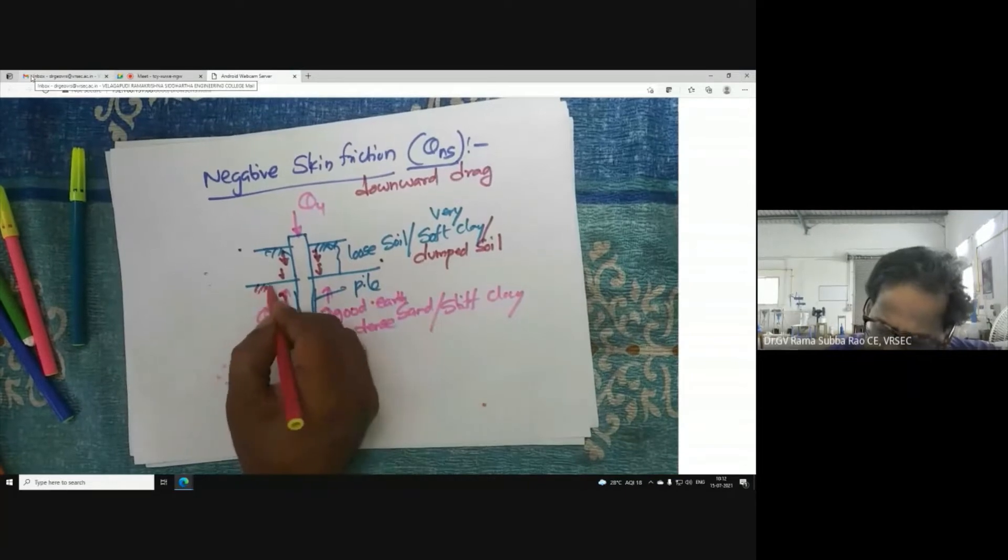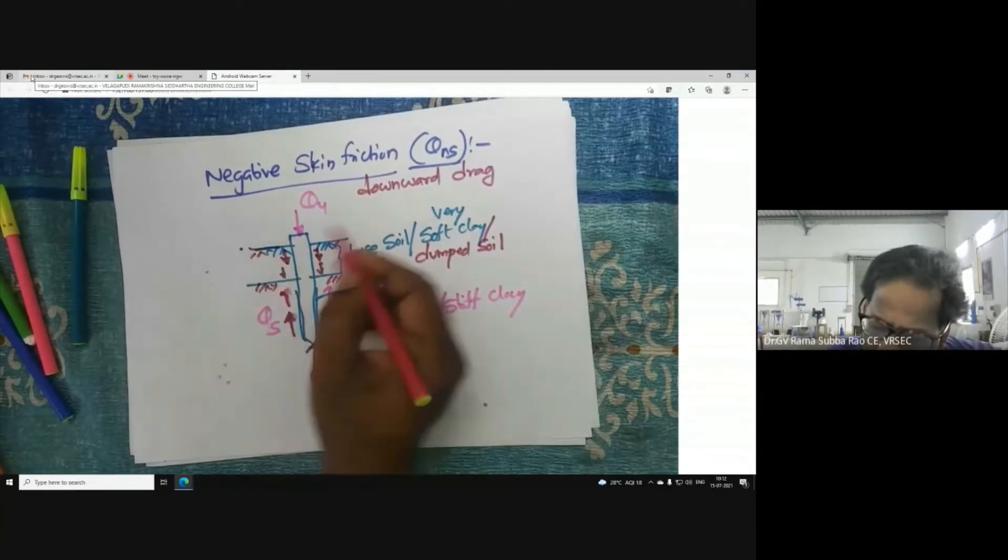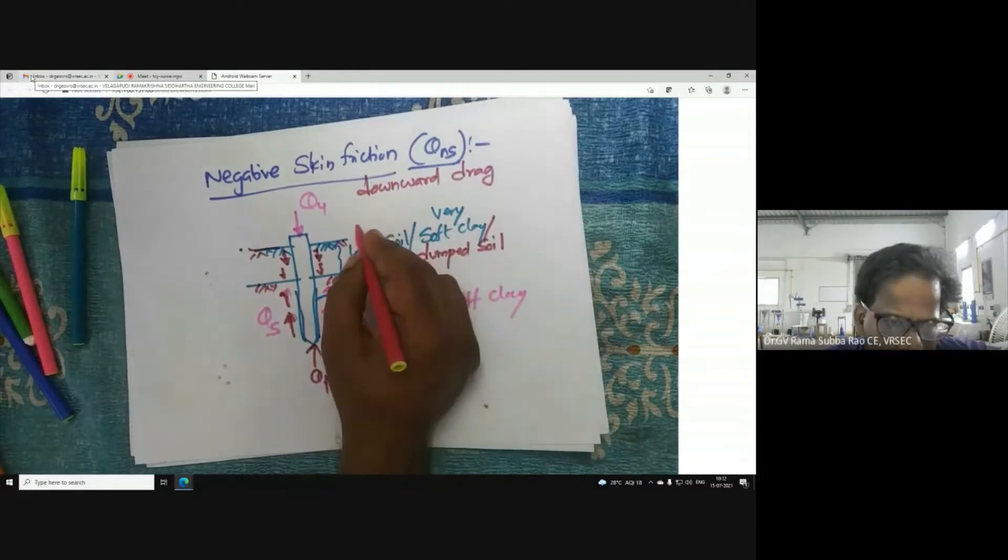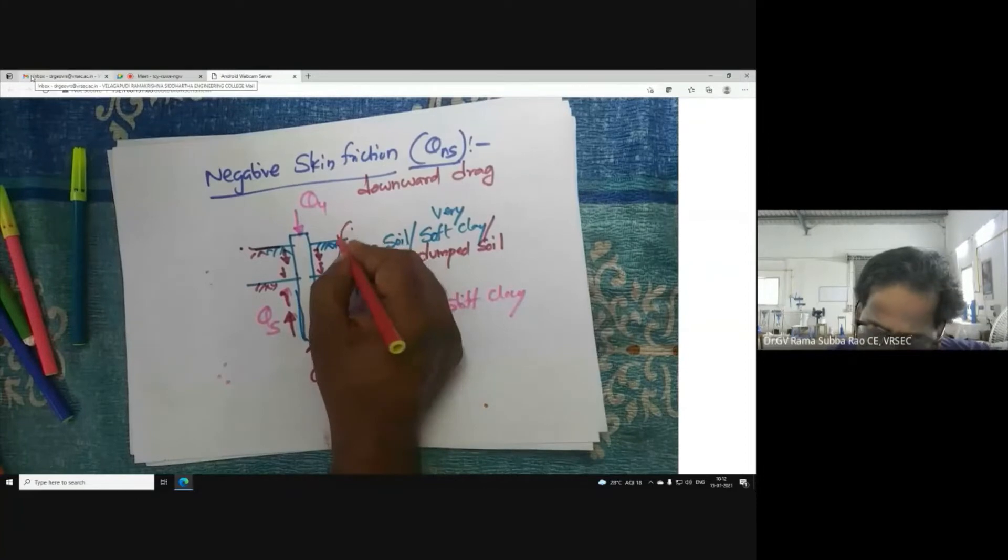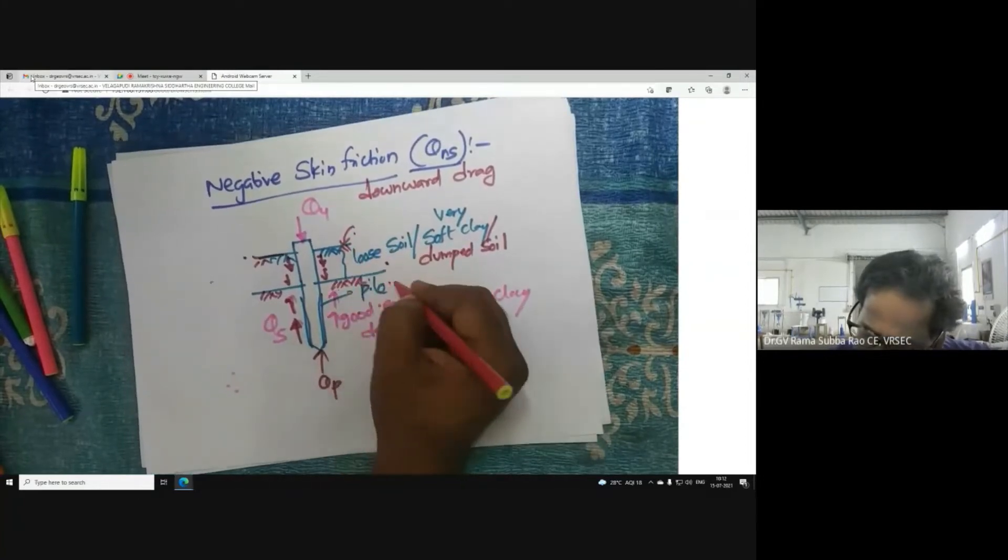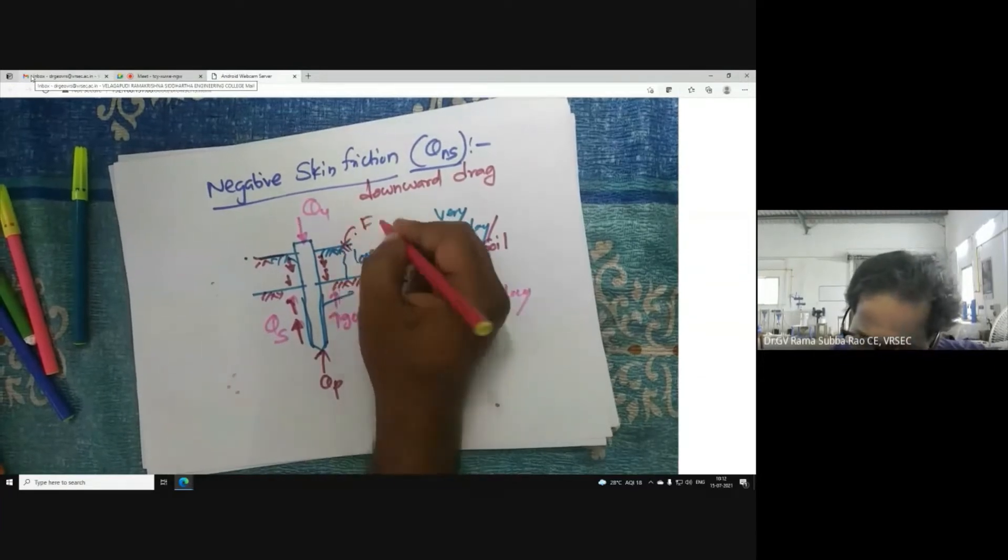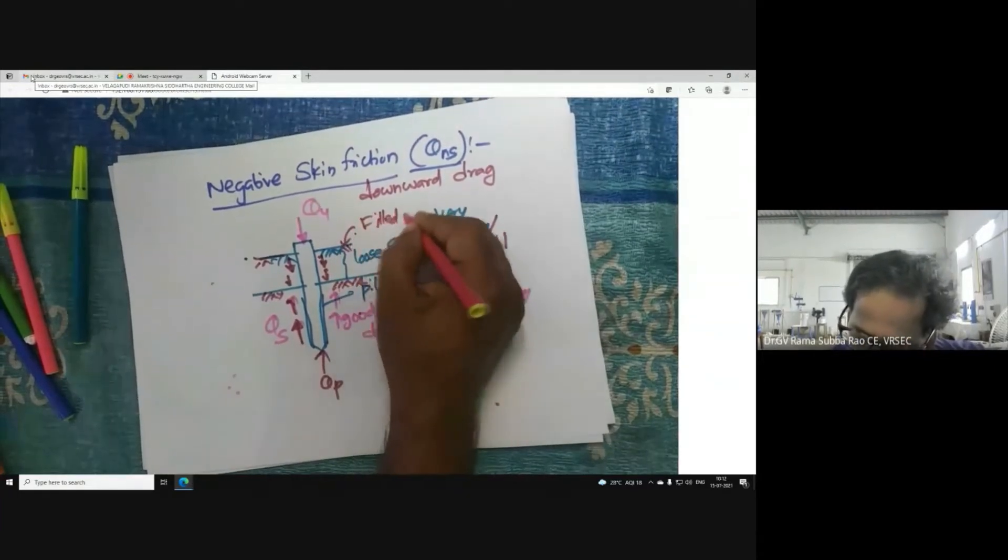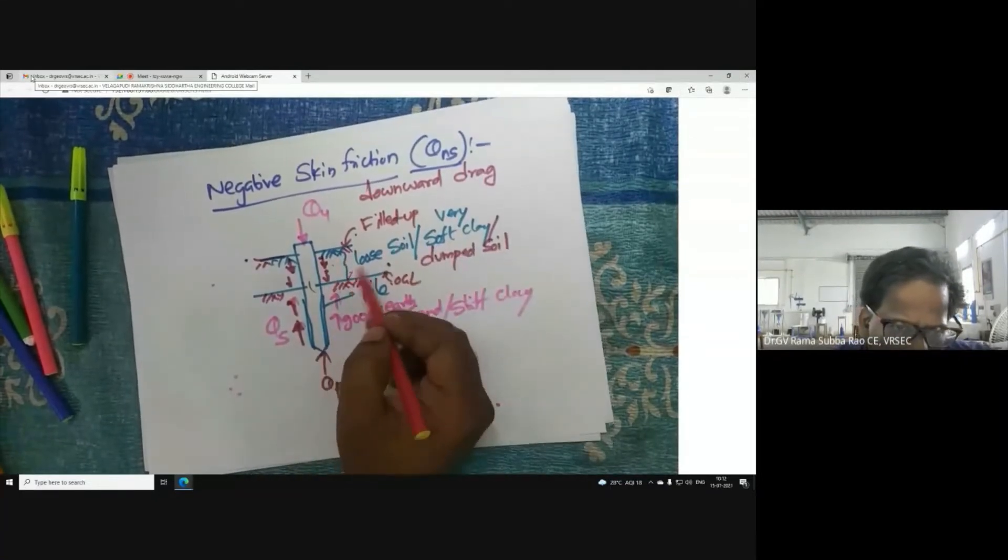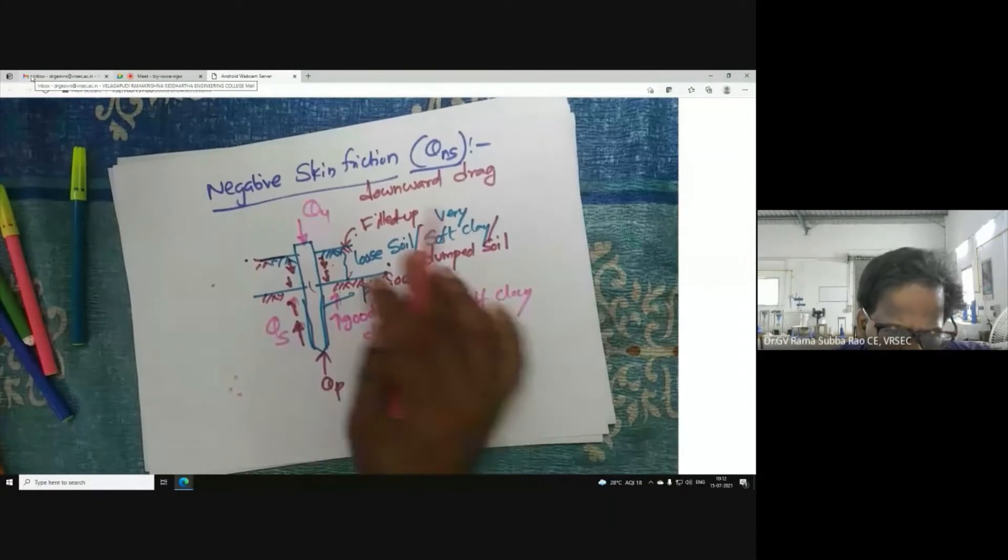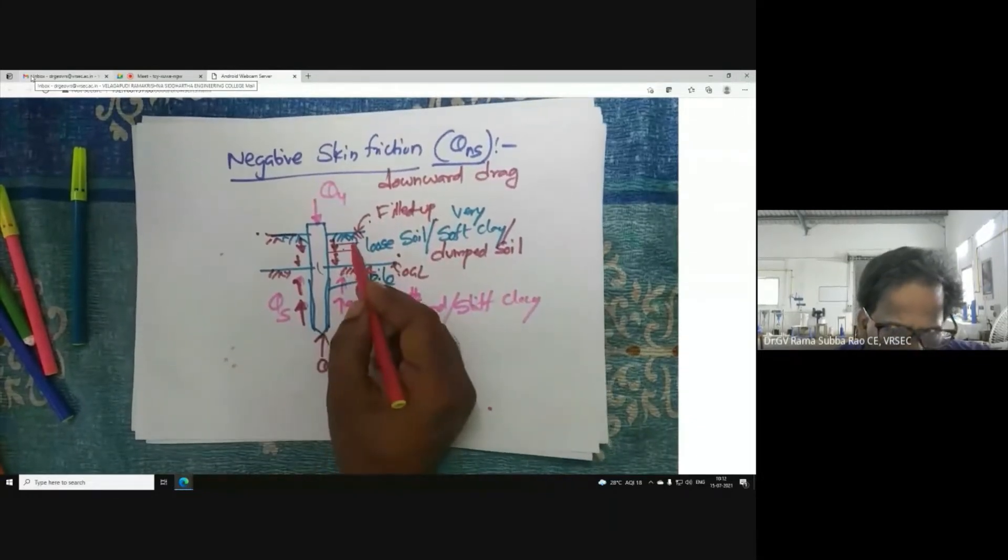For example, I have natural ground here. This is the original ground level (OGL). This is the filled up ground. Now, if the filling is done in an engineered way - meaning compacting layer by layer with the proper roller - then it is dense soil.